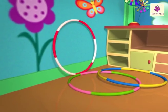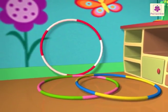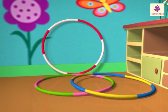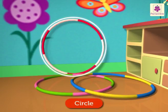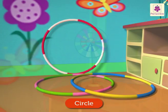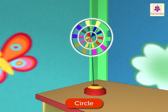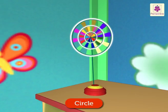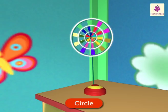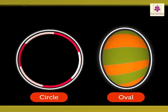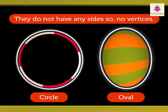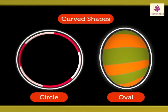Hey, look — Pearl has hula hoops too! We always see them in a circus. They are circle in shape. And look at the wind wheel; it has three circles that all go round and round when there is wind. A circle and an oval do not have any vertices as they do not have any sides. They are curved shapes.